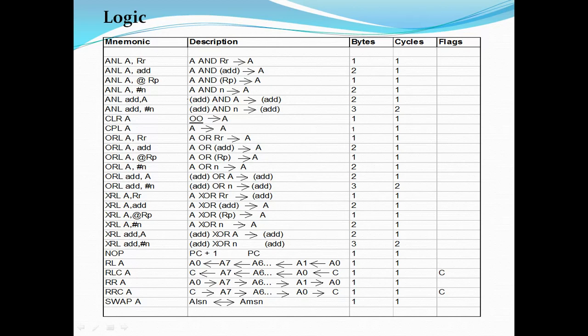ORL performs OR logic between the accumulator and general-purpose registers R0 to R7, or between the accumulator and address locations, or between the accumulator and a pointer register. Results are saved in the accumulator. ORL also supports OR logic with a one-byte constant value, OR logic between an address and the accumulator, and OR logic between an address and a constant value.